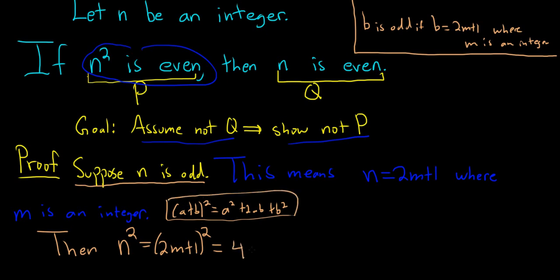So this would be 2m squared is 4m squared. And then you take these and multiply them and double it, so 4m, and then you square the last one, so plus 1. So this is what we have. And what are we trying to show? We're trying to show that n squared is odd. We're trying to show not p. So odd means 2m plus 1.